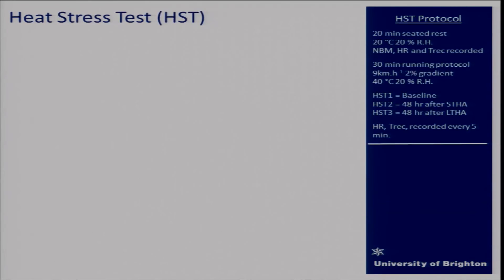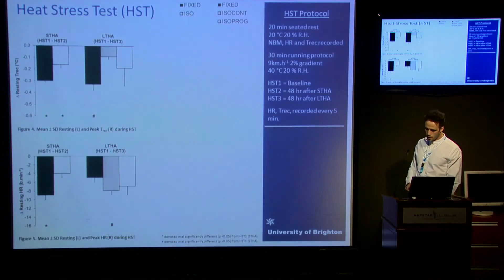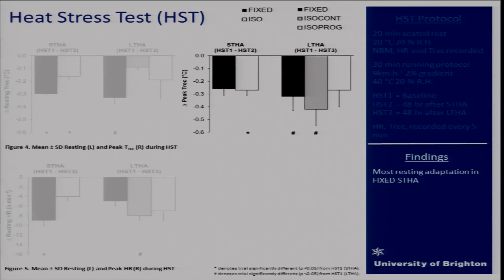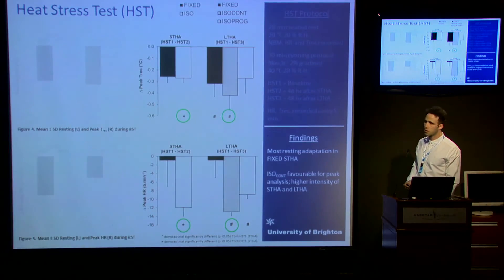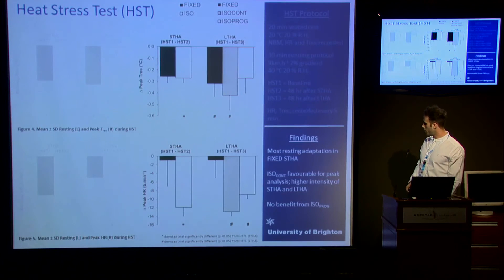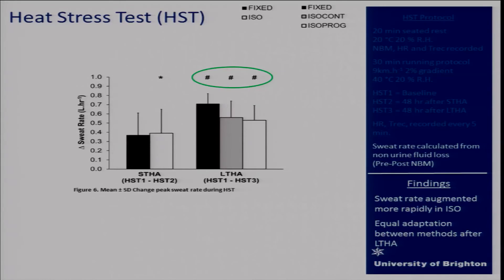The last data relates to the heat stress test. For short-term and long-term heat acclimation, rectal temperature and heart rates at rest suggest an earlier adaptation using the fixed model. This contrasts with peak rectal temperatures and peak heart rates during the heat stress test, where isothermic models appear more favorable, representing a higher exercise intensity. There doesn't appear to be any benefit from using a progressive isothermic model. Sweat rates are more rapidly augmented in an isothermic model over short-term heat acclimation, but over long-term heat acclimation we see no difference between the methods.